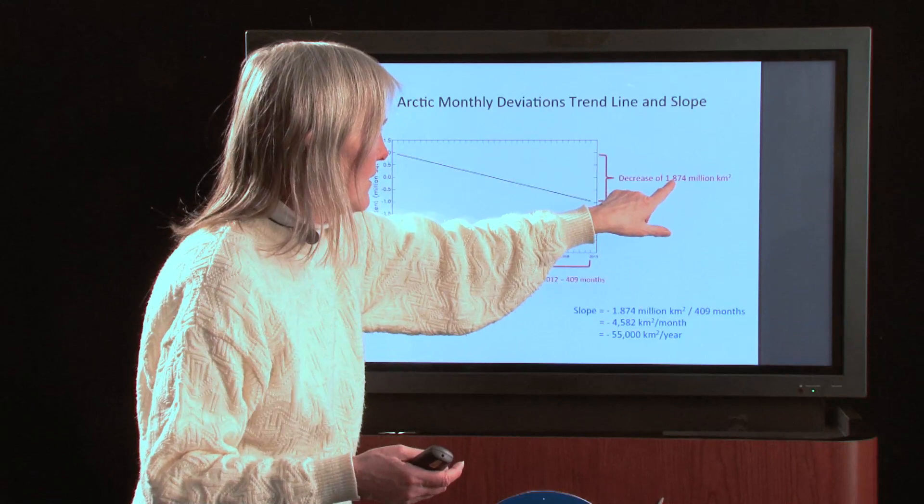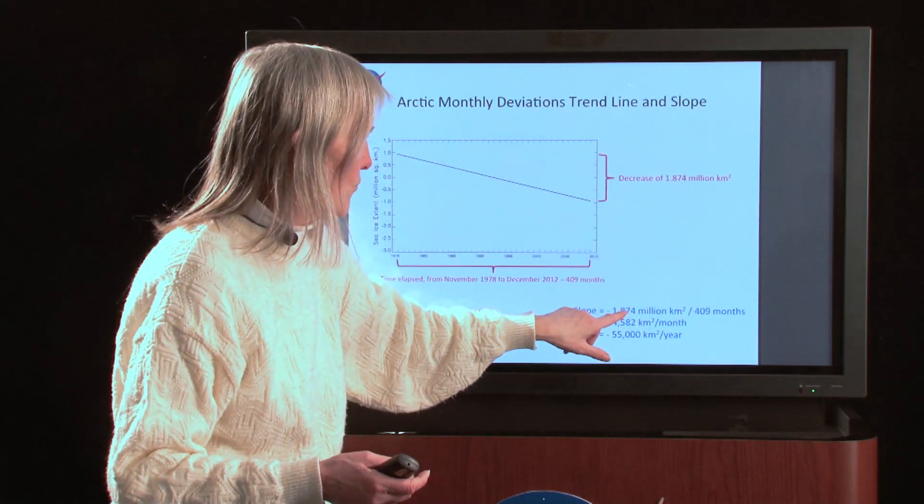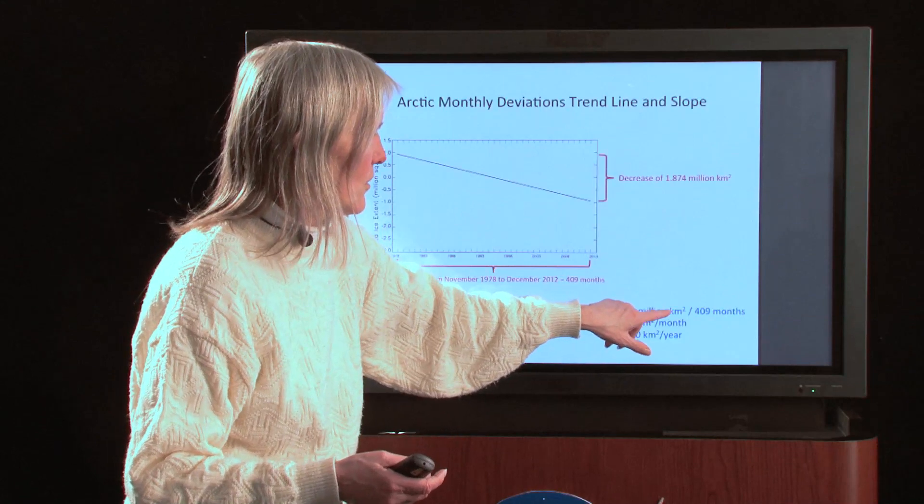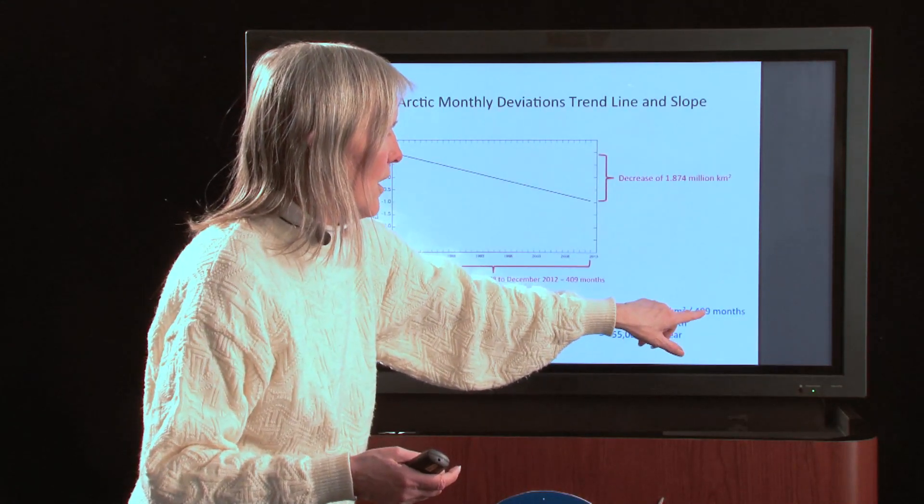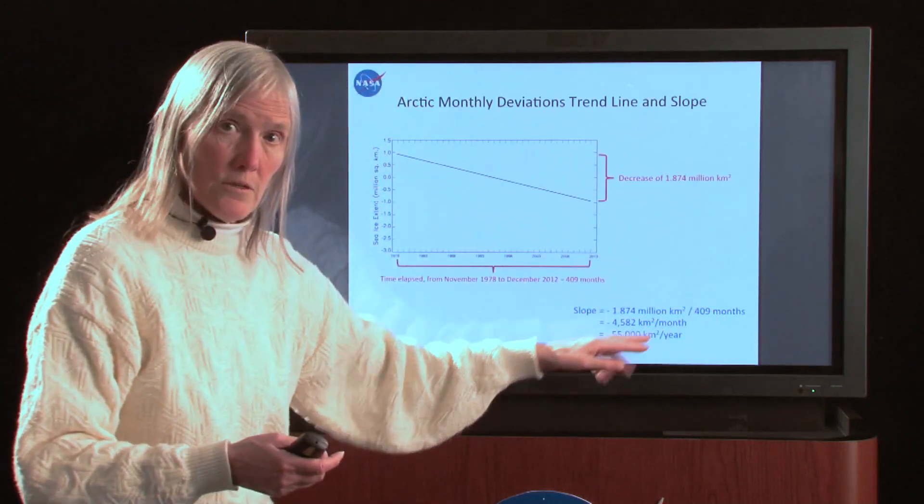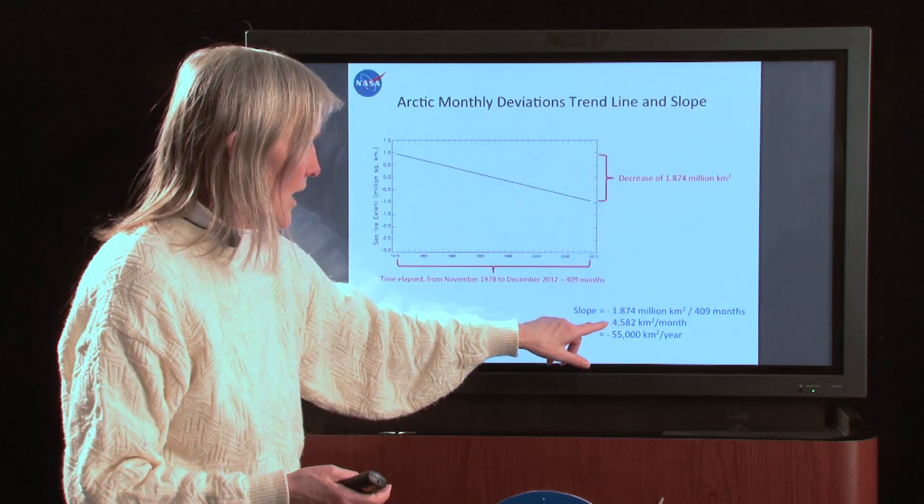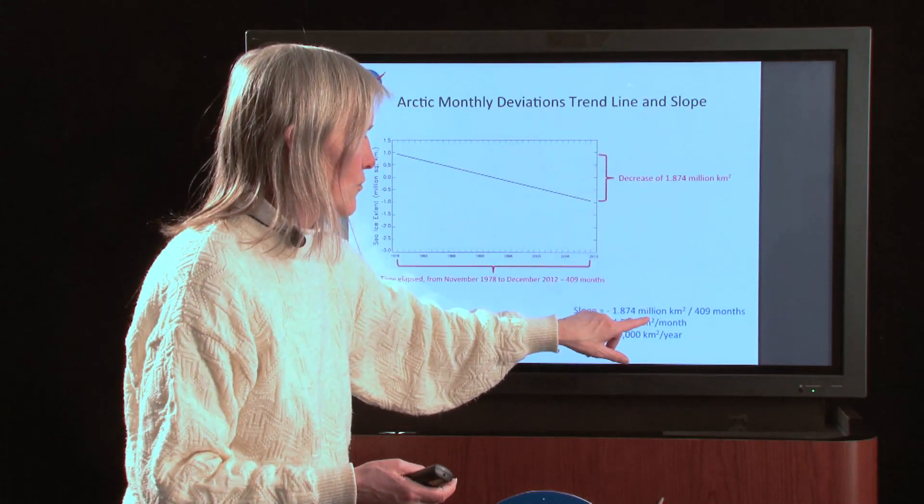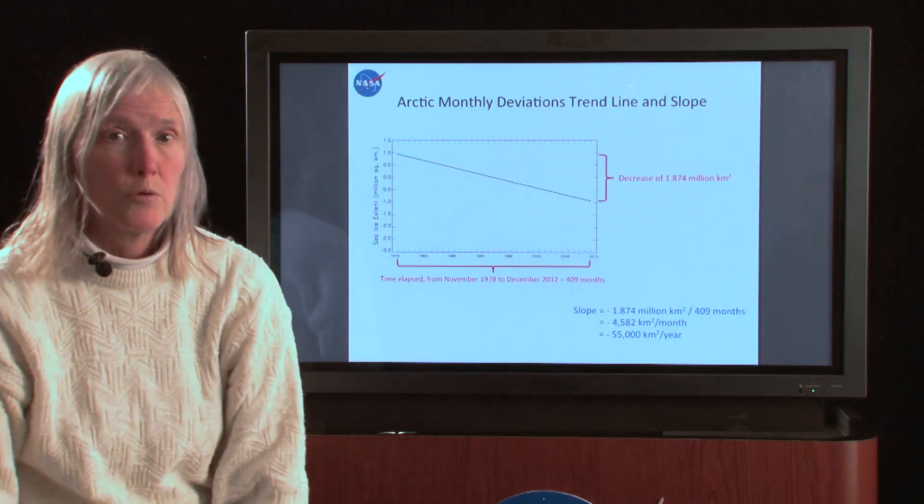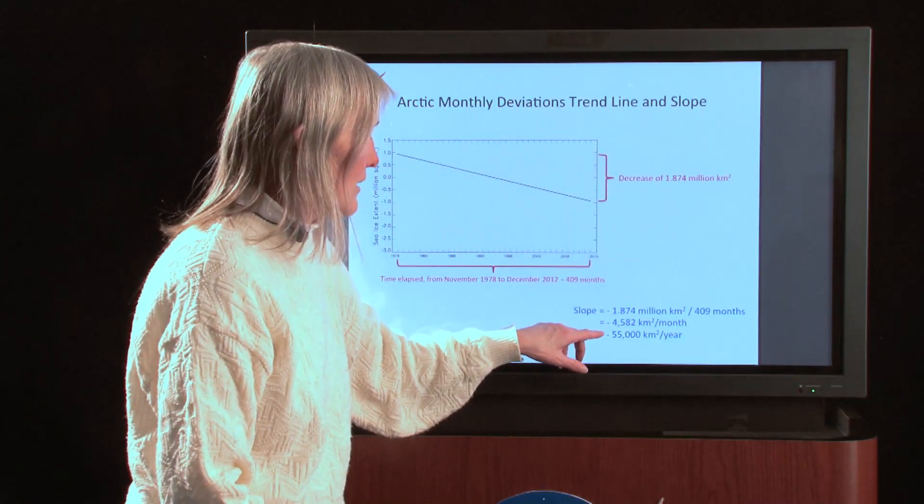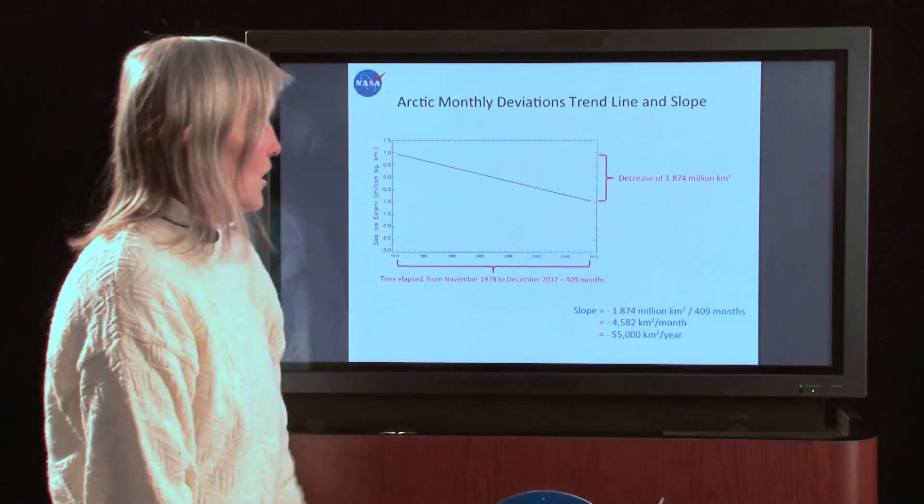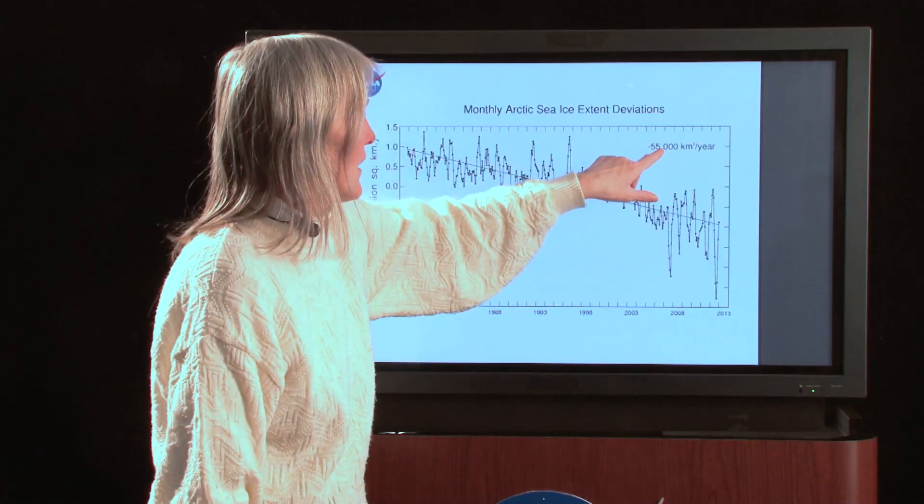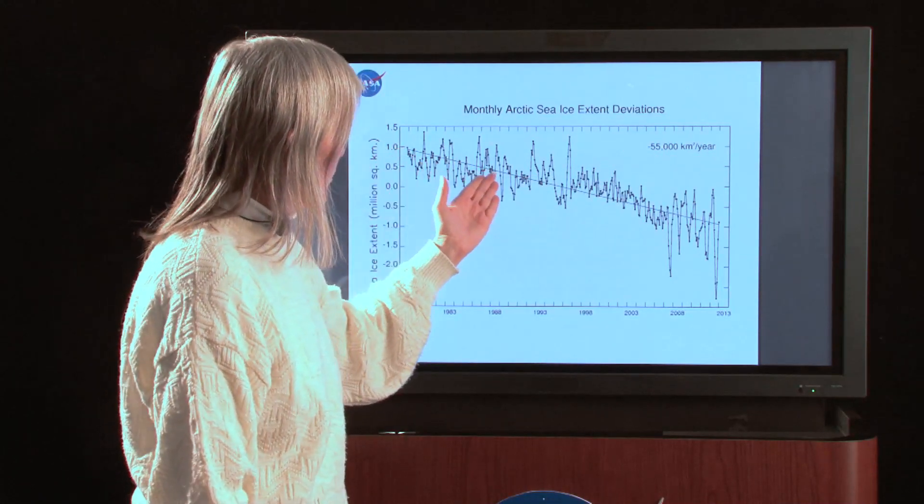So now we've got a decrease over the time period of 409 months because now we're dealing with monthly deviations and no longer yearly averages. And the decrease is 1.874. So 1.874 and since it's a decrease, we put a negative sign. The slope is a negative 1.874 million square kilometers over 409 months. Do that division, divide 409 into this month value and you get a value of negative 4,582 kilometers squared per month. Multiply by 12 since there are 12 months in a year and you get negative 55,000 square kilometers per year. So that's the slope of the line.